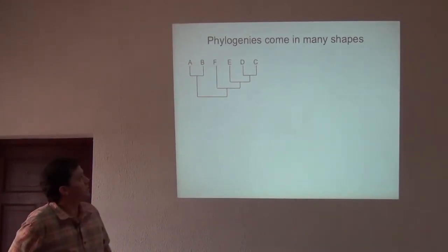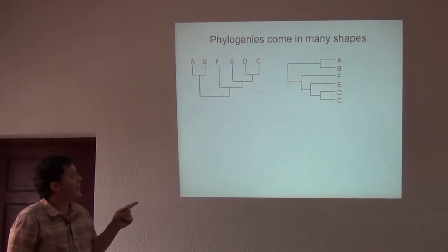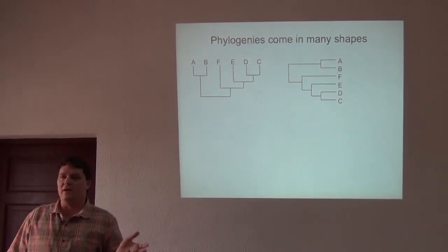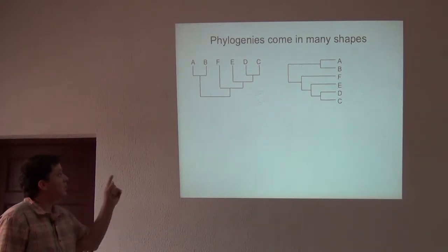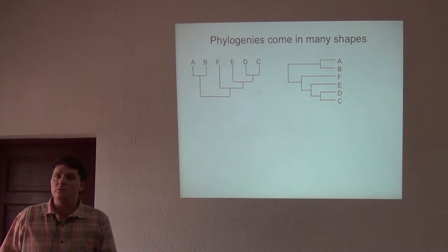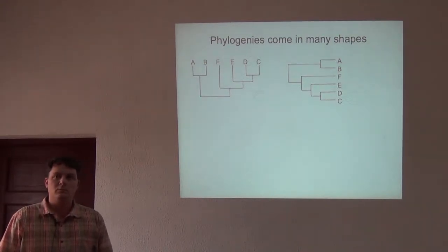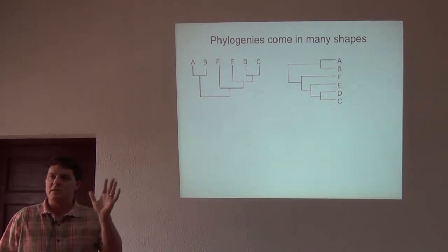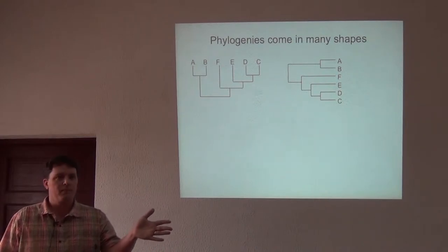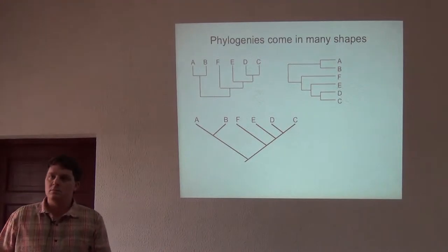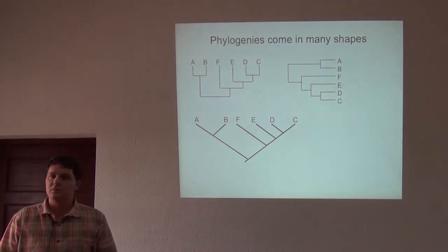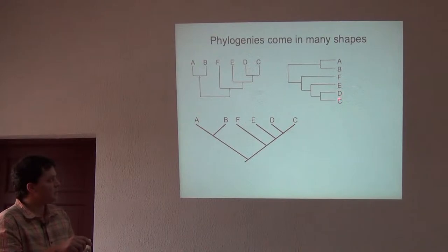I want to point out that phylogenies can come in a whole variety of shapes and sizes and orientations. Do those look different to you? It's just the same thing that's been turned on its side, right? You'll see these represented in publications in all different shapes and forms. How about this one? It's the same thing. Starting at the tips and working your way back, C and D are each other's closest relatives. They are linked to the taxon, the species E.